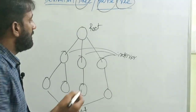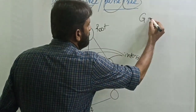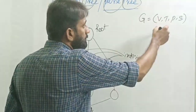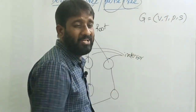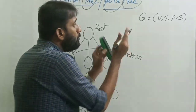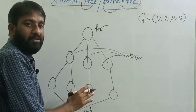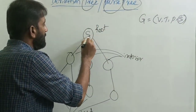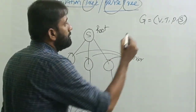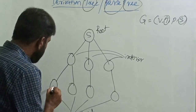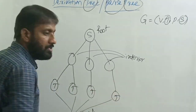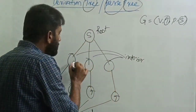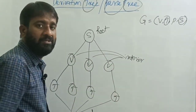Coming to context-free grammar, it is defined using four tuples: G = (V, T, P, S), where V is variable, T is terminal, P is production, and S is the start symbol. We have to map these four tuples into the tree. The start symbol is written as the root node. All leaf nodes are terminals. Interior nodes are always variables.